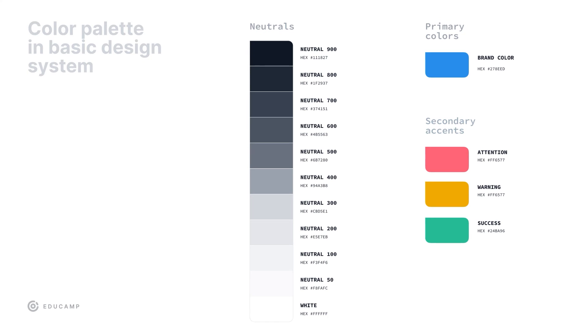But wait — there are more bright colors on the picture, and I've just told you that we are using just one. These secondary accent colors are not used regularly in the interface. They appear only when there is a need to communicate a system status, like attention, warning, or success. In the basic design system that goes with this course, you can also find a color palette — it consists of a range of neutral colors, an accent color, and status colors.